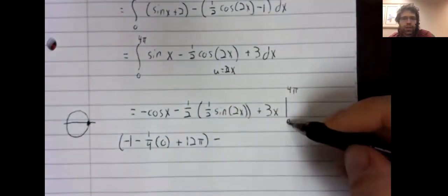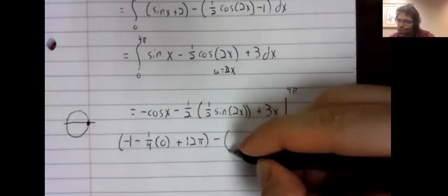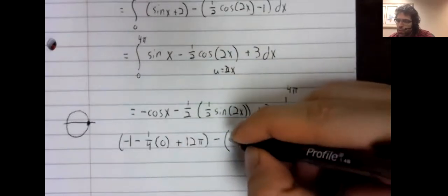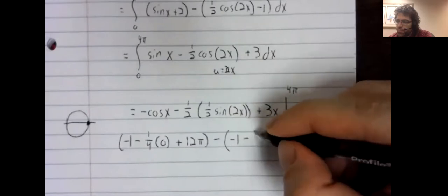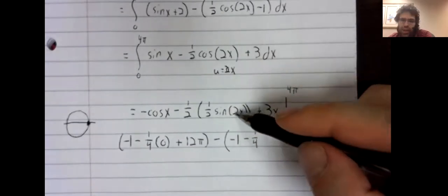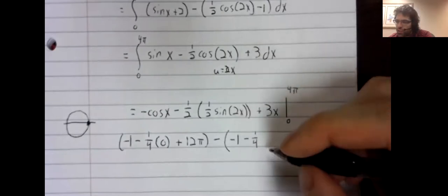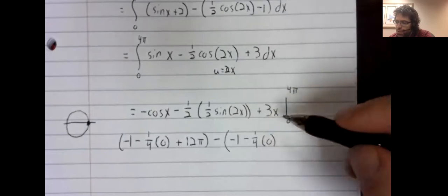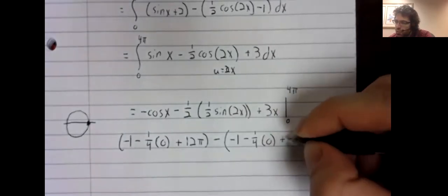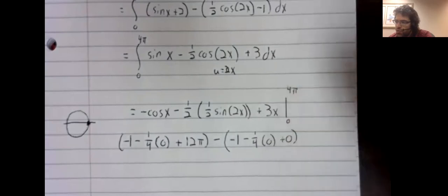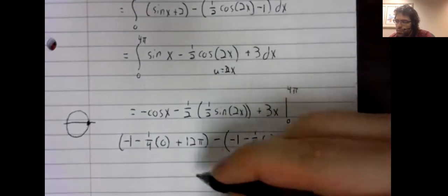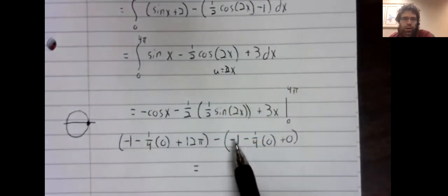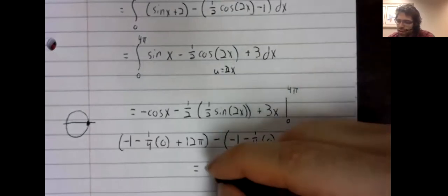And now we'll plug in our lower limit of integration. The cosine of zero is one. The sine of zero is zero. Three times zero is zero. So, let's see. This negative one and this negative one cancel. We're subtracting them.